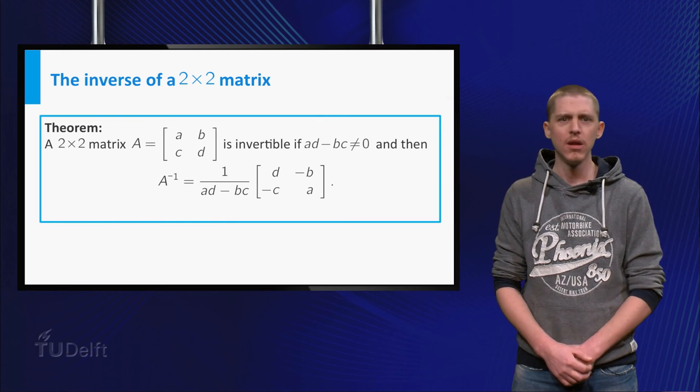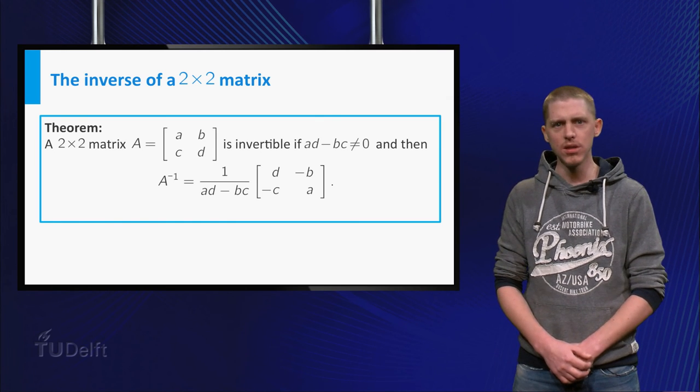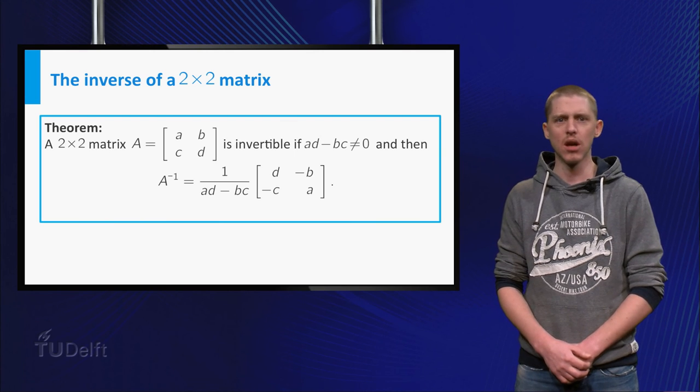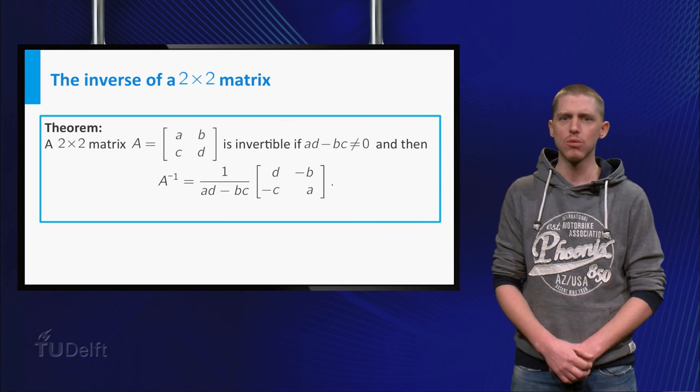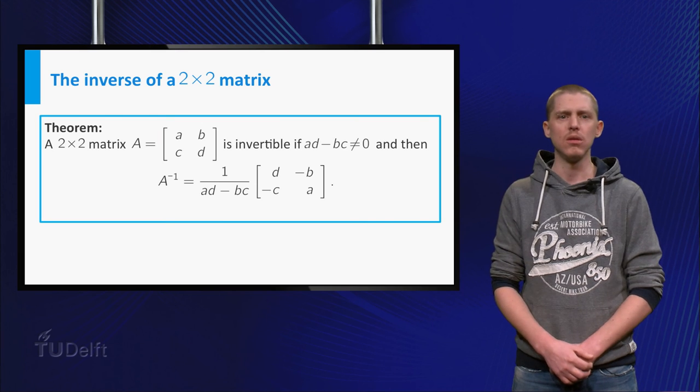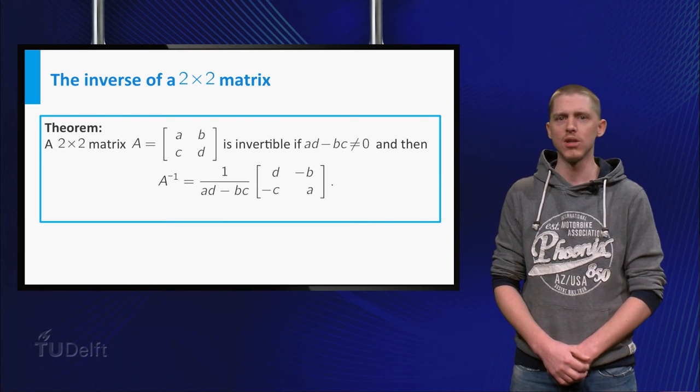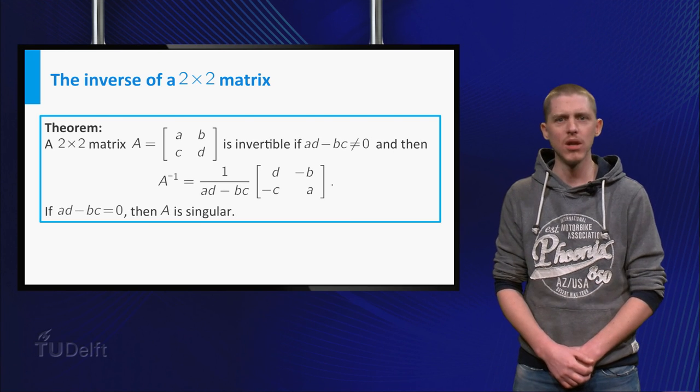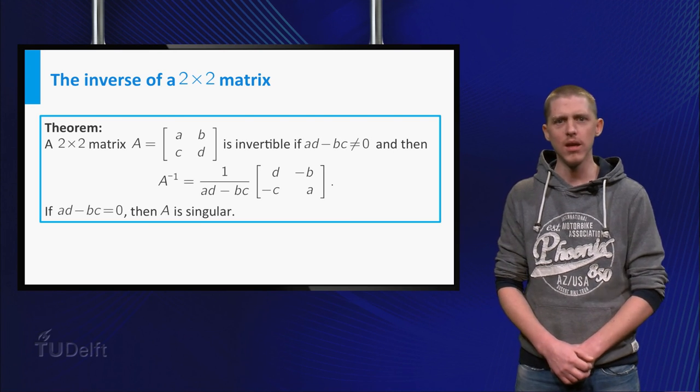We can formulate the result from previous manipulations as a theorem. A 2 by 2 matrix A given by a, b, c, d is invertible if ad minus bc is unequal to 0 and has inverse 1 over ad minus bc times d, minus b, minus c, a. If ad minus bc is 0, A is singular.